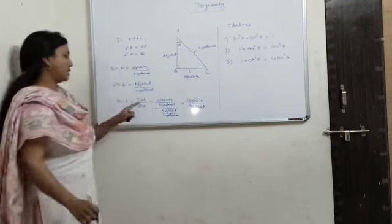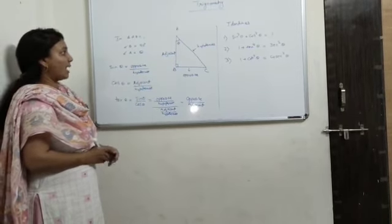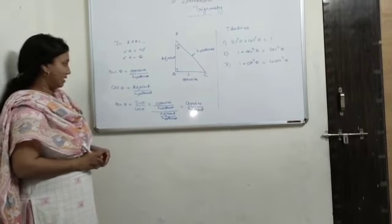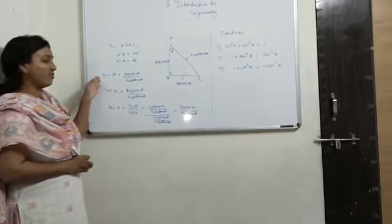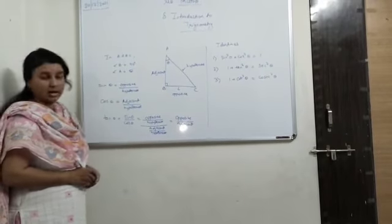So tan theta is opposite upon hypotenuse. So these are the formulas to find the angle given to us in the right angle triangle. So you can easily find sin theta, cos theta, hypotenuse using this formula.